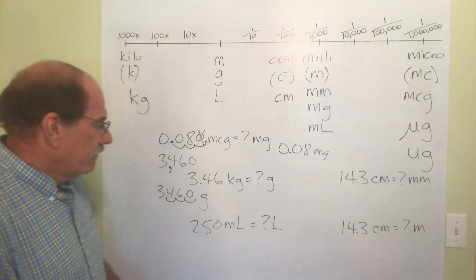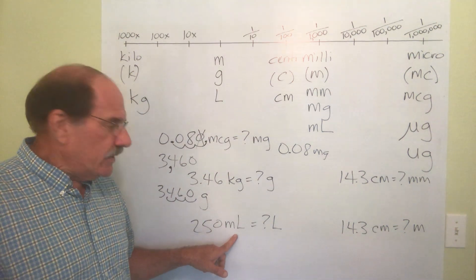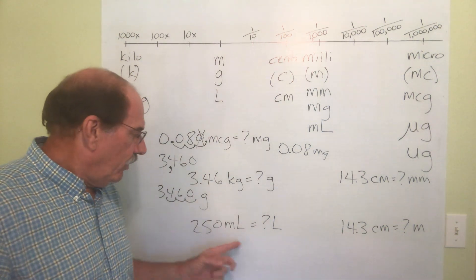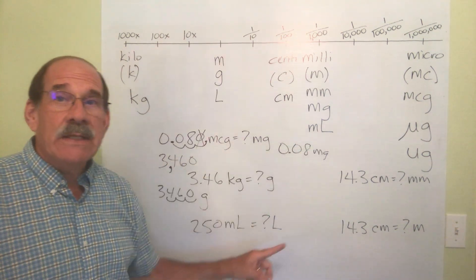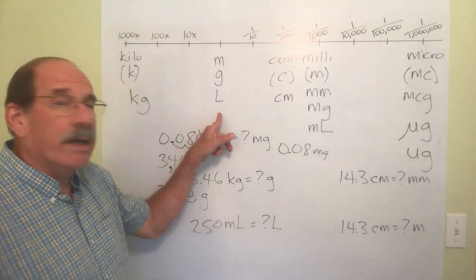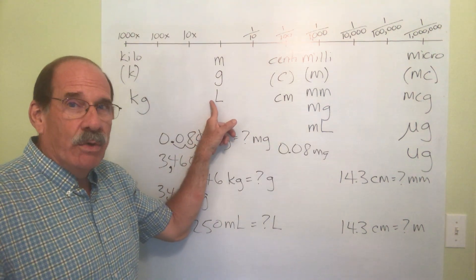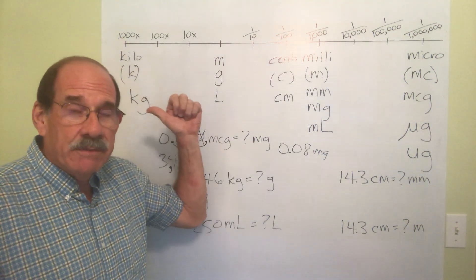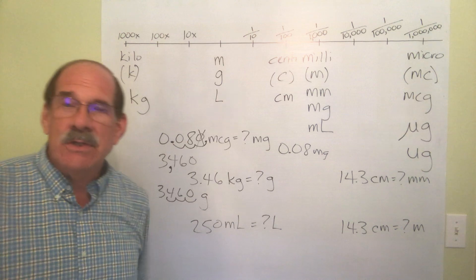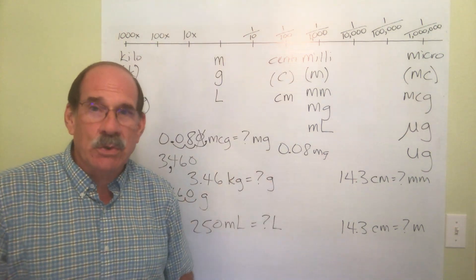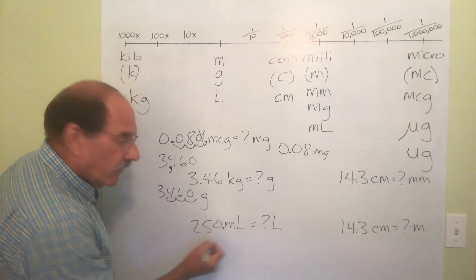Isn't this fun? We're going to convert 250 milliliters and see how many liters that is. Well, where's milliliters on the chart? It's right here. Where's liters on the chart? It's right here. So to go from here to here, I go which way? Left. How many jumps? 1, 2, 3. I jump three decimal places to the left. Here we go again. A whole number. The dot is on the far right.